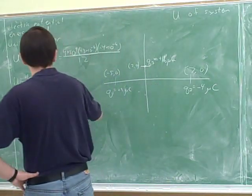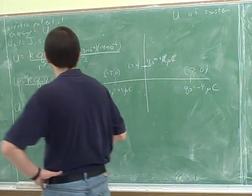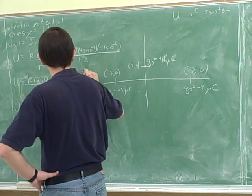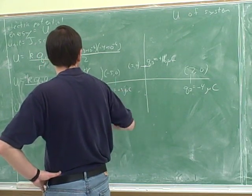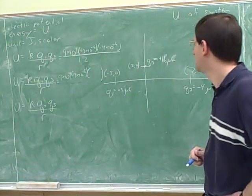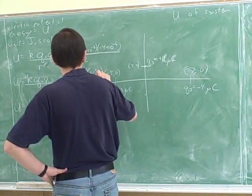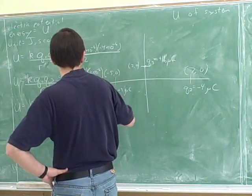So 9 times 10 to the 9 times positive 3 times 10 to the negative 6 times positive 16 times 10 to the negative 6.